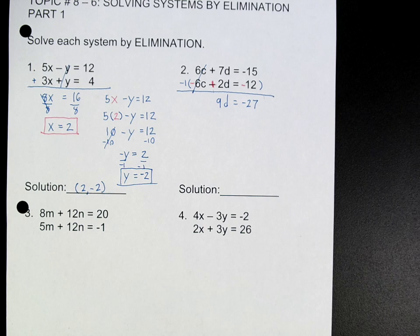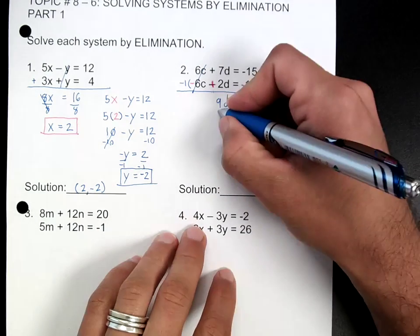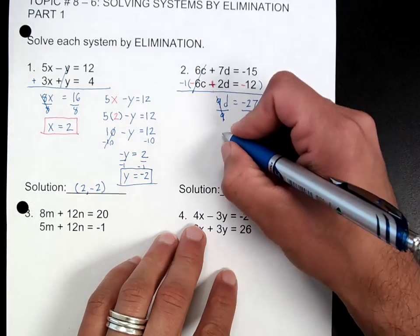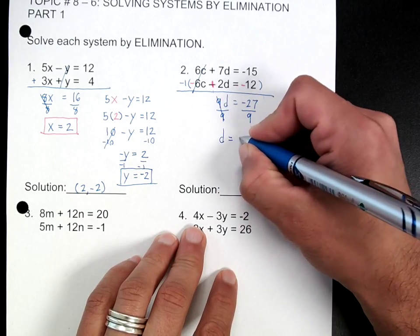Then once I have one variable equal one number, I know I did it right. I'm going to divide and plug it back in. So divide, and we've got d equals negative 3.